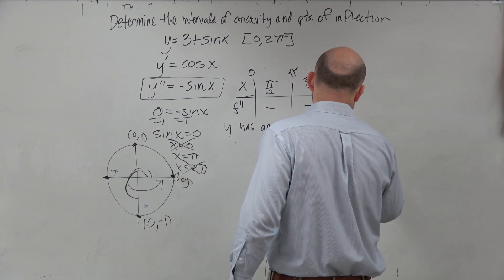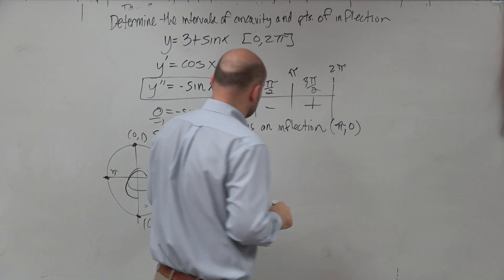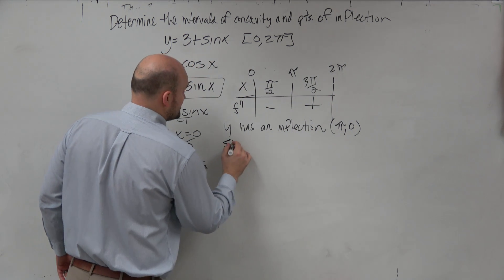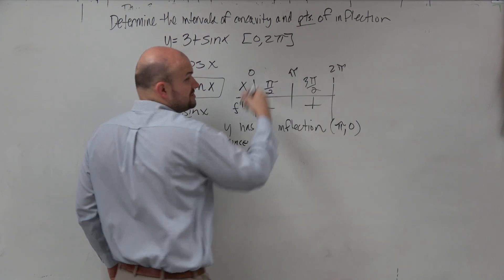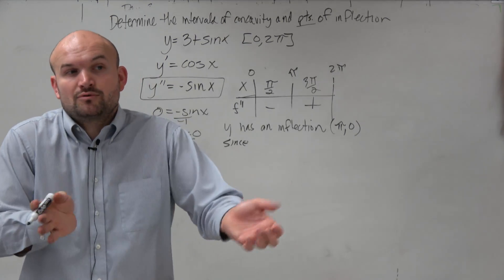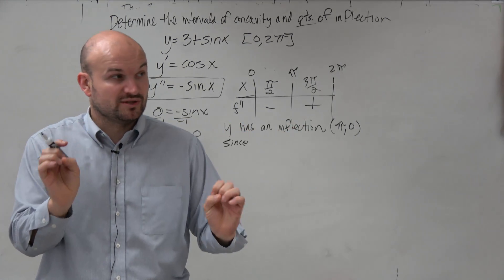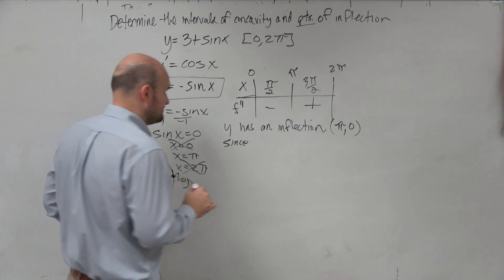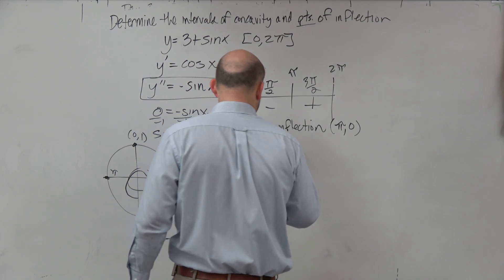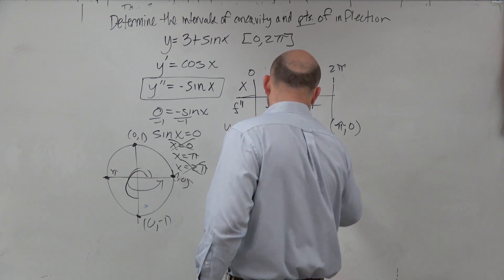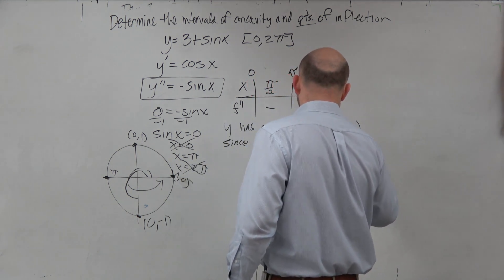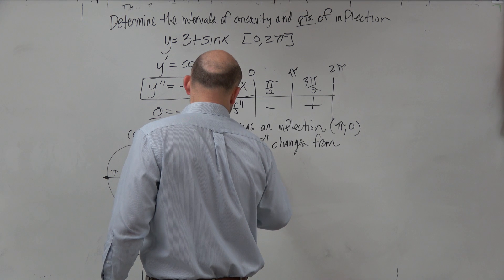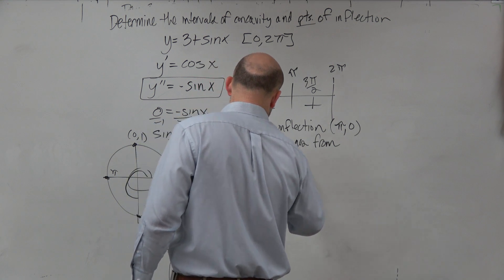if we plug in pi, we get sine of pi is 0 times a negative is 0, right? So y has an inflection point at pi comma 0. So just make sure, if they're talking about points, you've got to give the point. If they say the value, you could just say x equals whatever the value is. Make sure you know the difference.